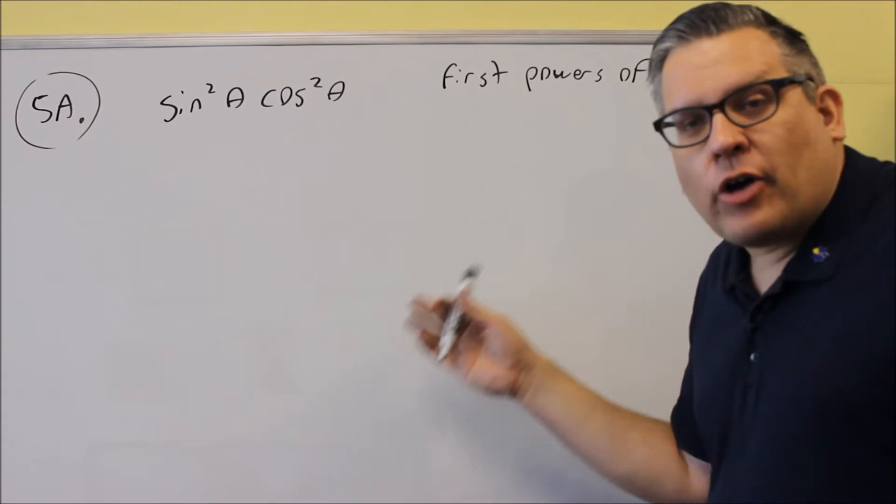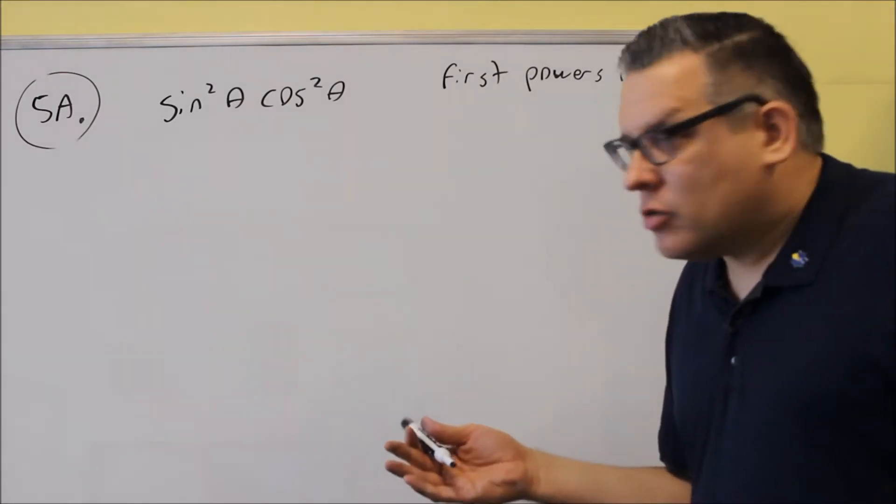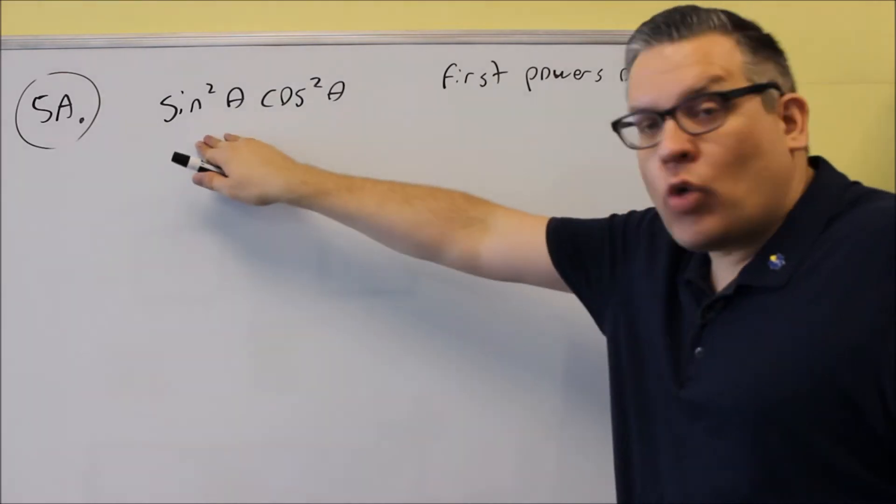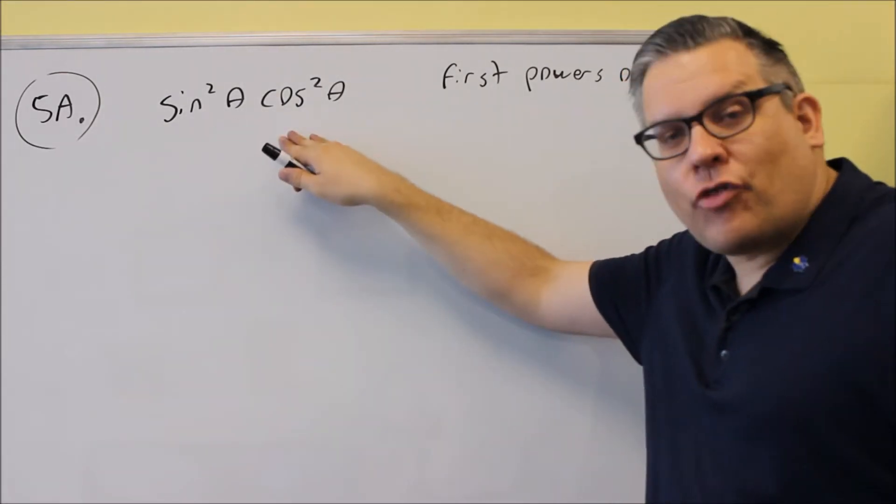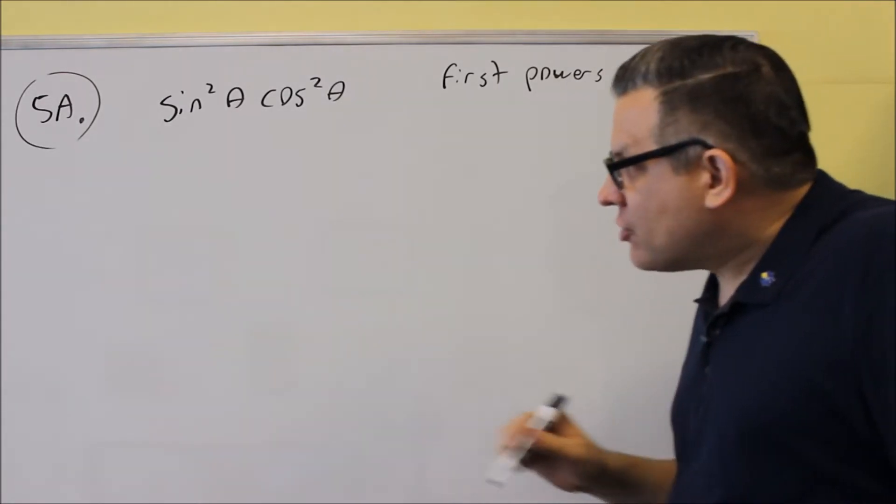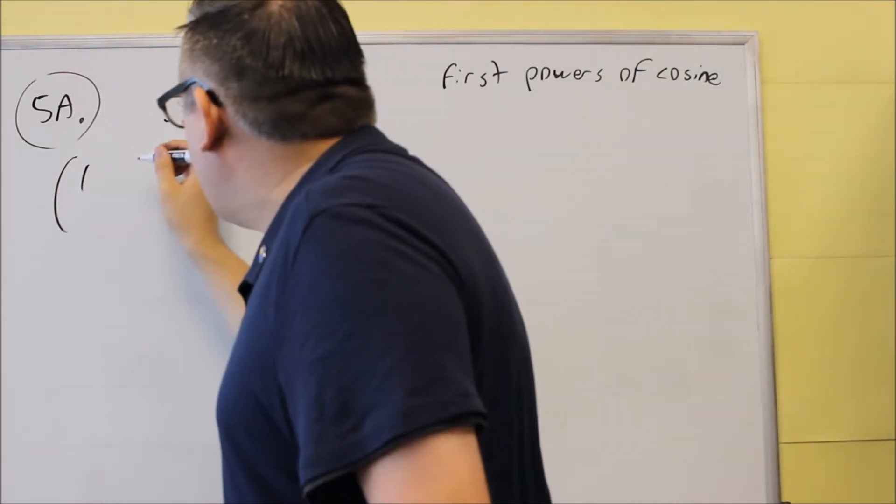Because it's telling you to use the power reducing formulas, you want to be familiar with those, and we're going to plug in a power reducing formula for each. There's one for sine squared and there's another one for cosine squared, so you have to actually use a different one for each.